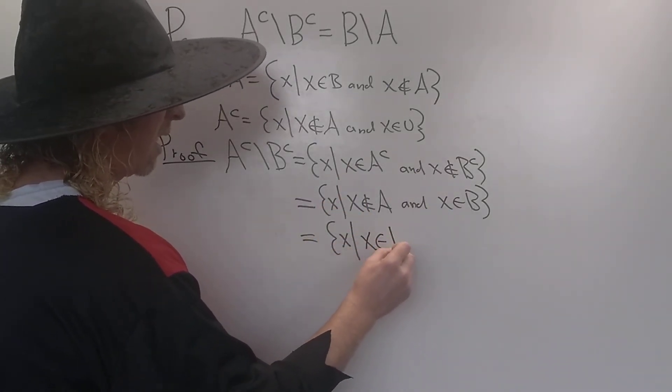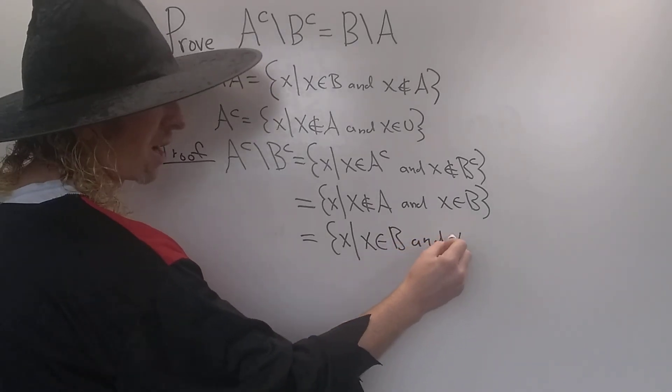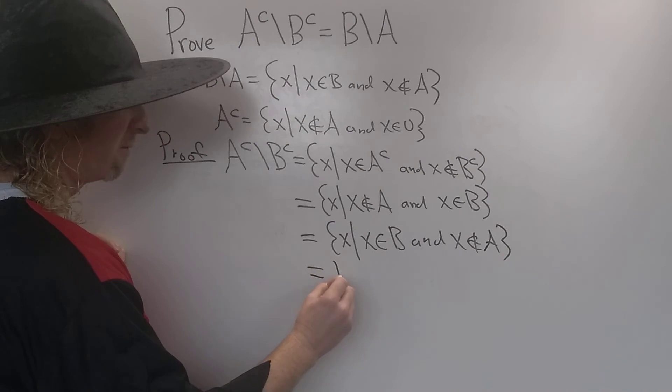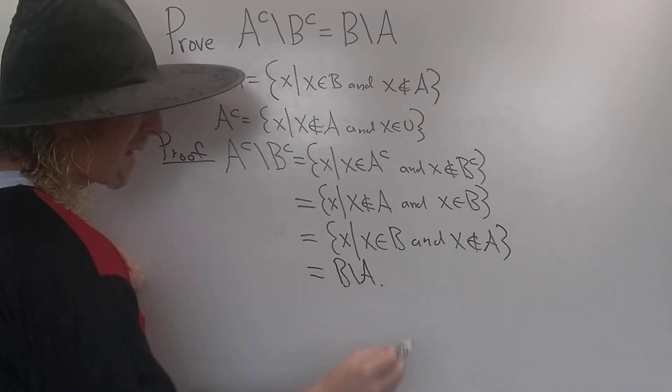So this basically means that I'm going to write it again one more time. X is in B and X is not in A. Just writing it one more time. And this is precisely the definition of B set minus A. And that completes the proof.